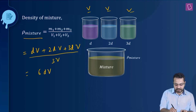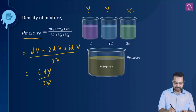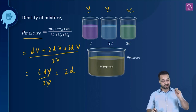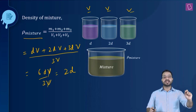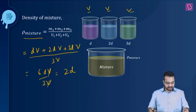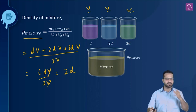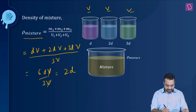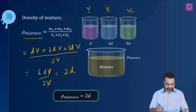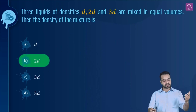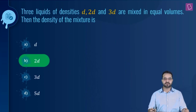So the numerator is 6DV divided by 3V. V cancels and we are left with 2D. The density of the mixture is 2D — a pretty simple question. Looking at the options, option B is the correct answer.